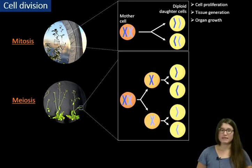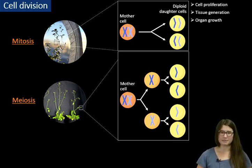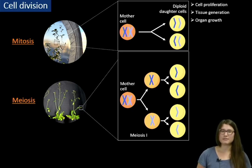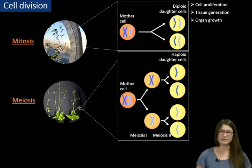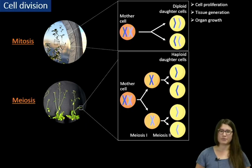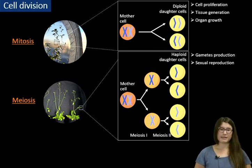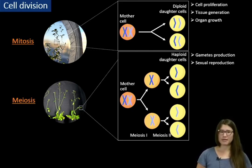Meiosis is a bit more complicated. It starts again with the mother cell where the homolog chromosome pairs align in the middle. Then two homolog chromosomes separate into two different cells — this is meiosis I. Afterwards we have meiosis II, where sister chromatids separate into two daughter cells. In the end we have four haploid daughter cells, two of them containing the paternal genetic background and the others containing the maternal one. Meiosis is important for gamete production and therefore sexual reproduction. Later, maternal and paternal gametes will fuse together to produce a zygote, a new diploid cell.